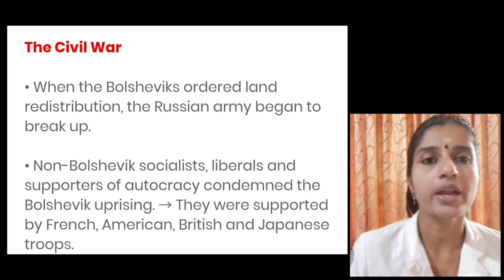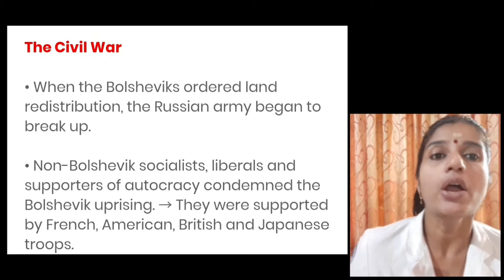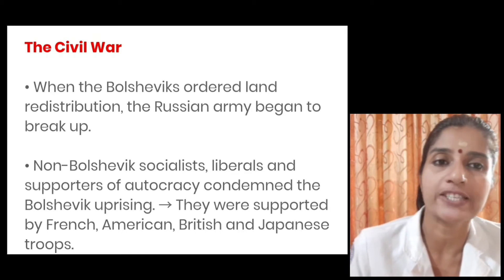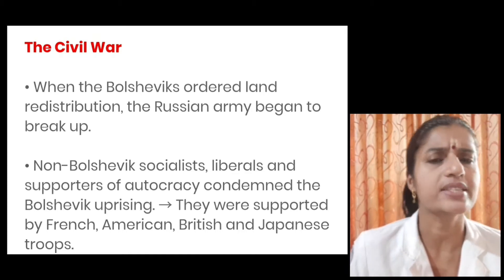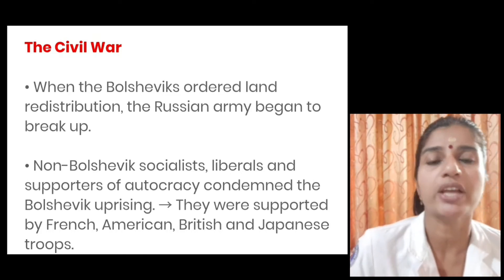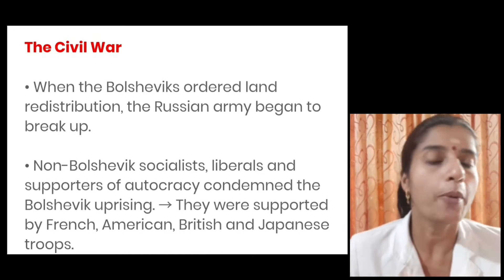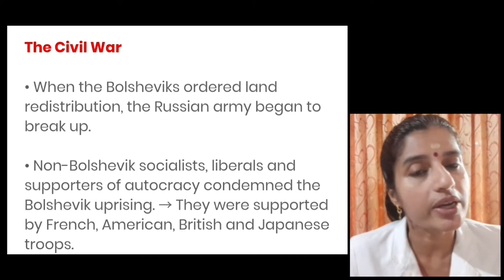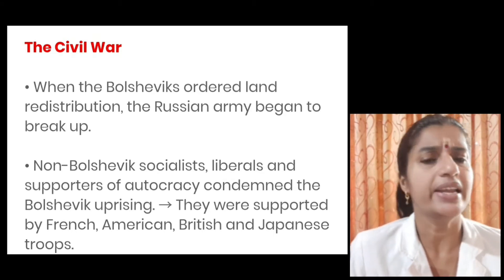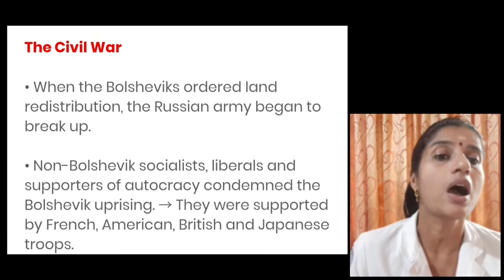After the October Revolution, there was a civil war that broke out between the Bolsheviks on one side and non-Bolshevik socialists, liberals and supporters of autocracy on another side. A civil war is a war between organized groups within the same state or country. Non-Bolshevik socialists, liberals and supporters of autocracy condemned the Bolshevik uprising. Their leaders moved to South Russia and organized troops to fight with the Bolsheviks.